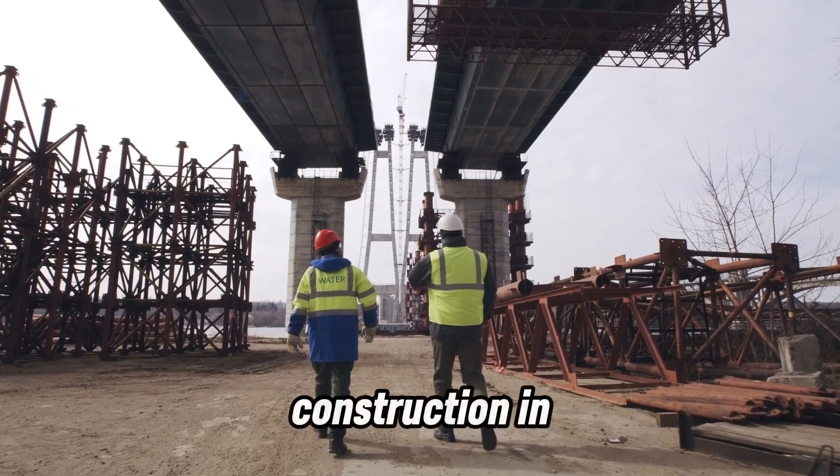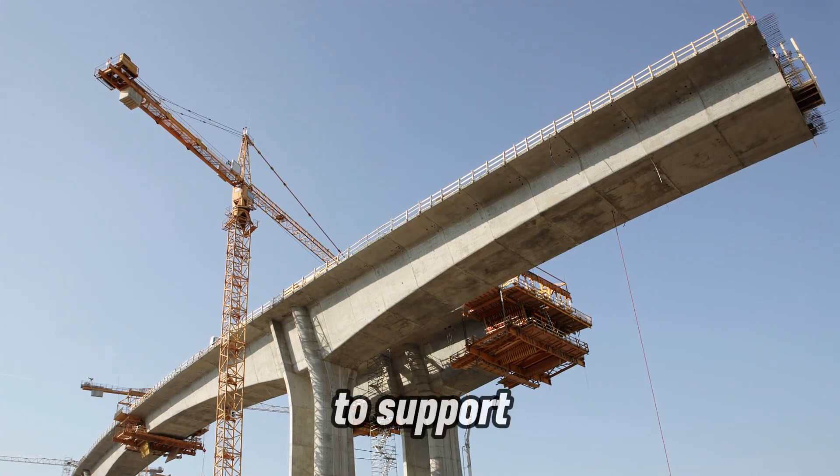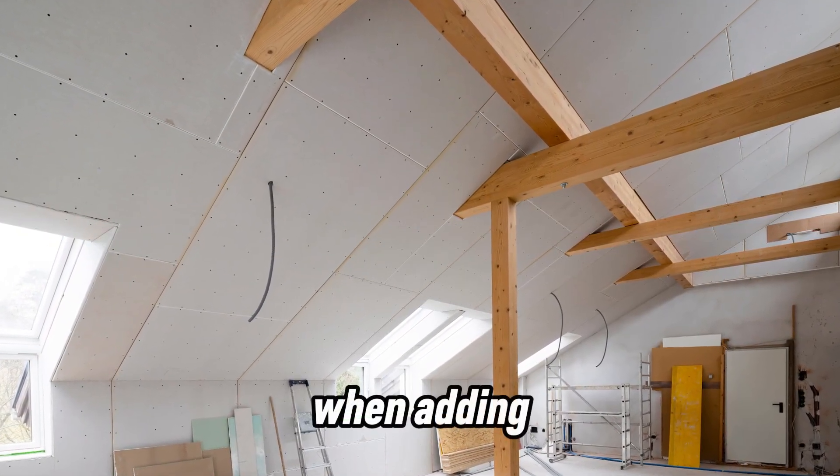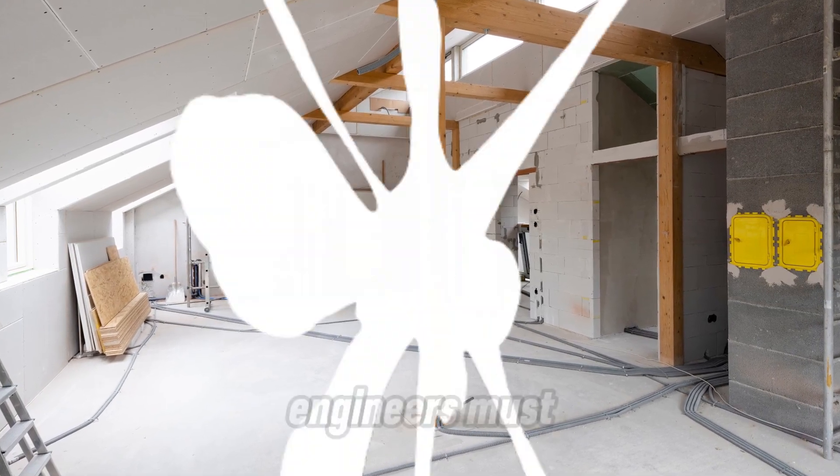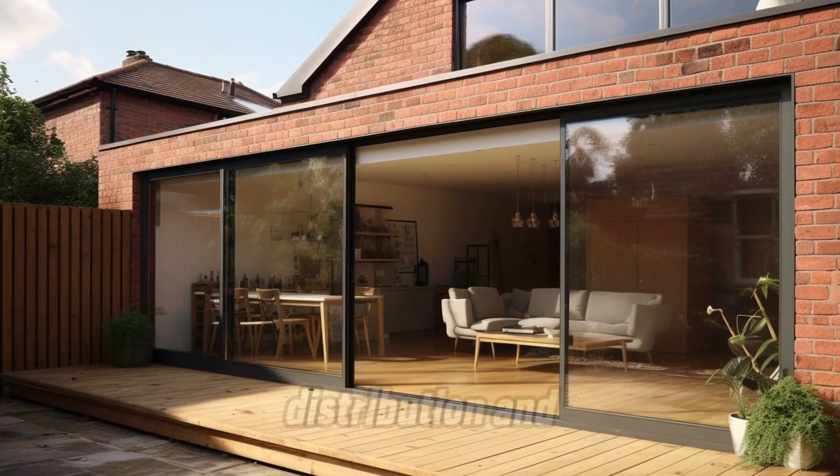First is bridge construction. In bridge engineering, overhanging beams are often employed to support walkways or utility extensions. Second is building extensions. When adding extensions to existing structures, architects and engineers must assess how overhanging beams will affect the load distribution and stability of the building.